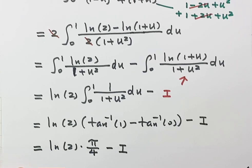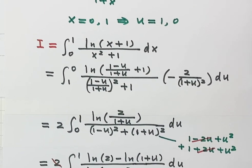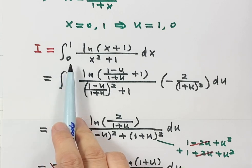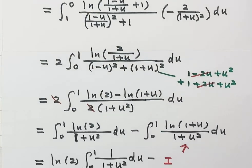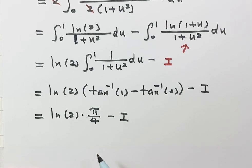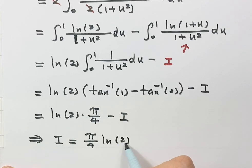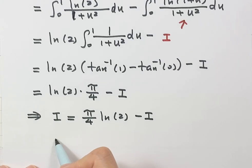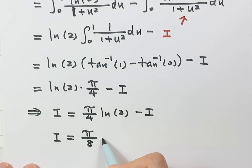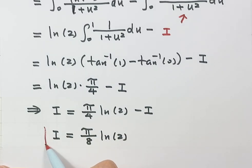So we now have I = (log 2)(π/4) - I. Putting both I's together gives 2I = (π/4) log 2, and dividing both sides by 2 gives the final answer: I = (π/8) log 2.